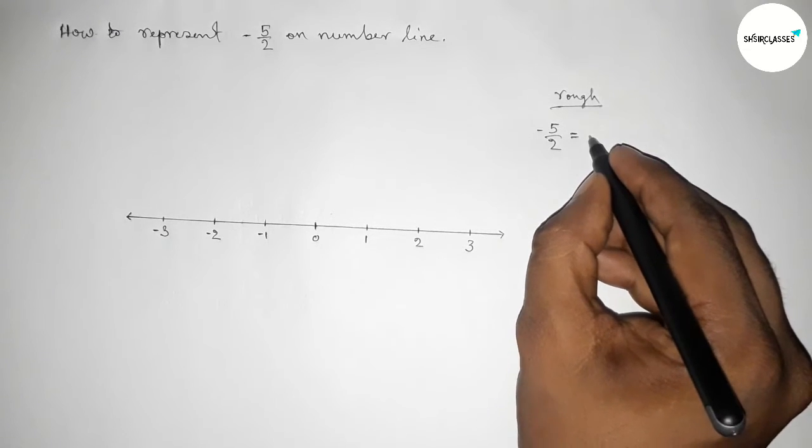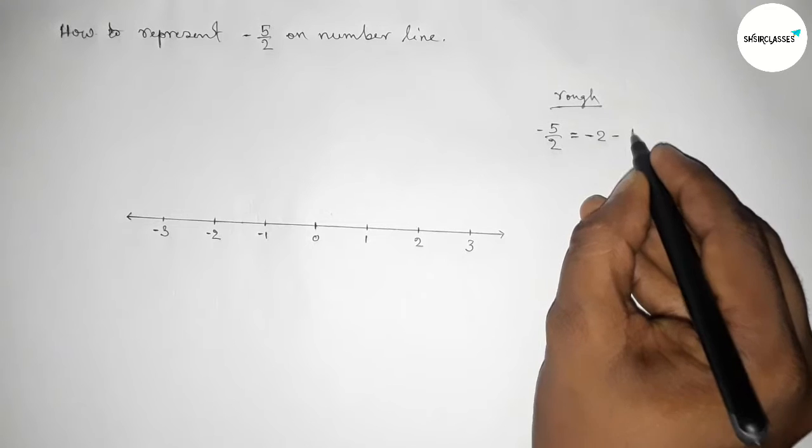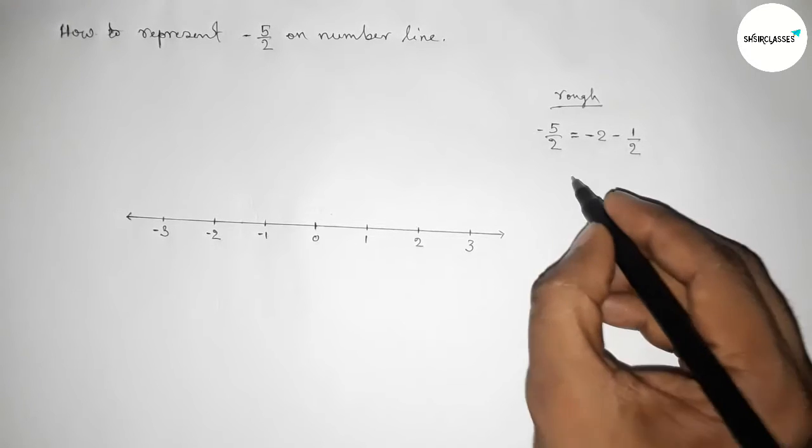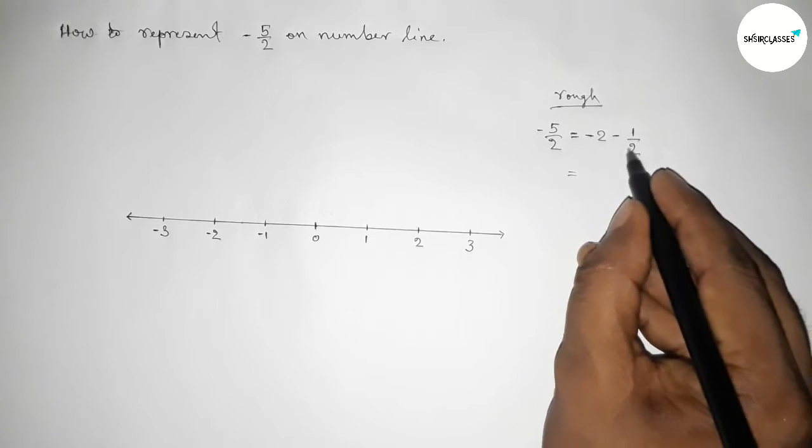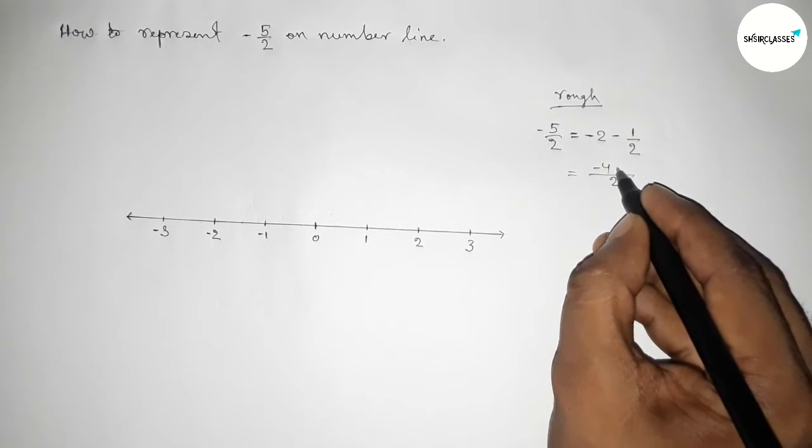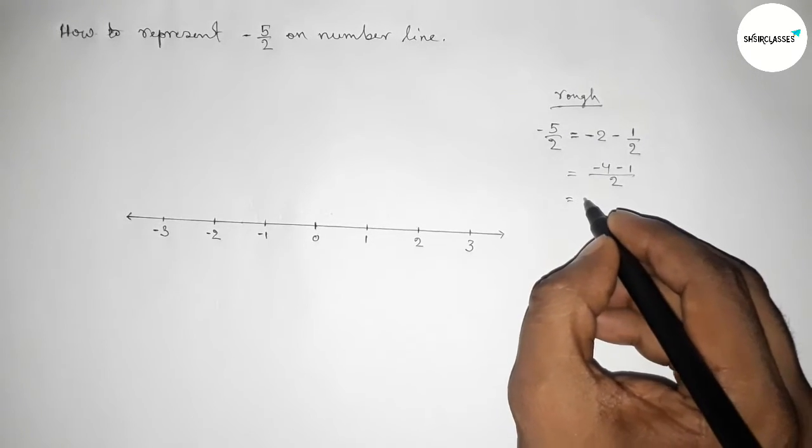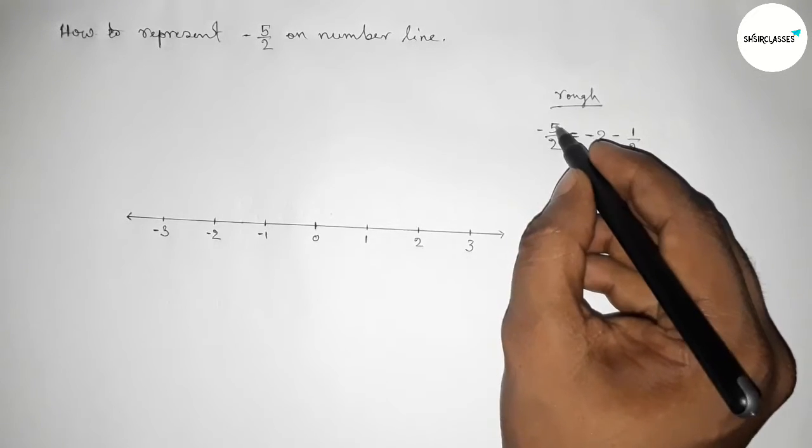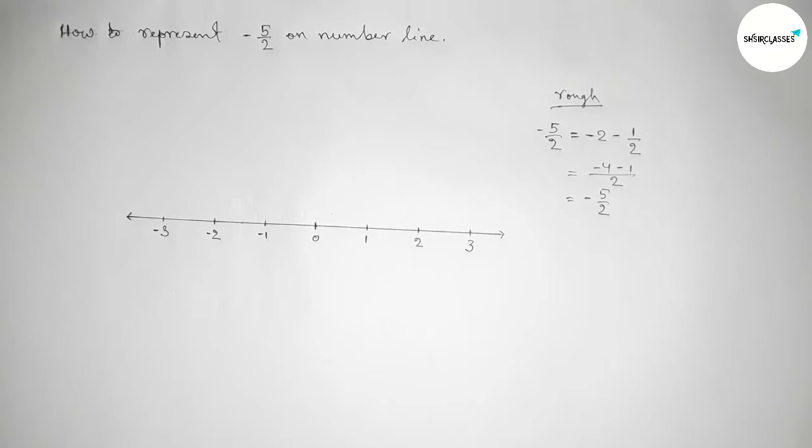Okay, now I'm going to verify this. So here the LCM equals to two, and two two zero here minus four and here minus one. So simplifying this, so this is minus five by two, so this is and this is equal. So we can write minus five by two equals to minus two minus one by two.